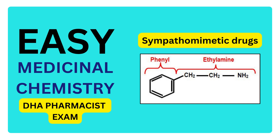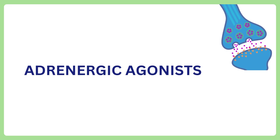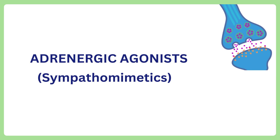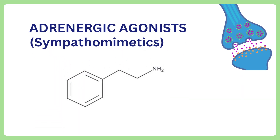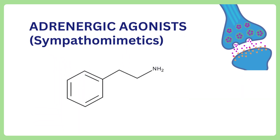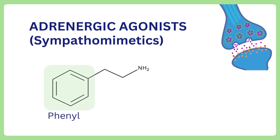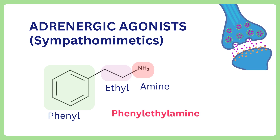Welcome back. Today, let's discuss the medicinal chemistry of adrenergic agonists. Adrenergic agonists are also known as sympathomimetics. This is the basic backbone of all sympathomimetics. It consists of a linearly arranged phenyl group, an ethyl group, and an amine group. This parent structure is called beta-phenylethylamine.